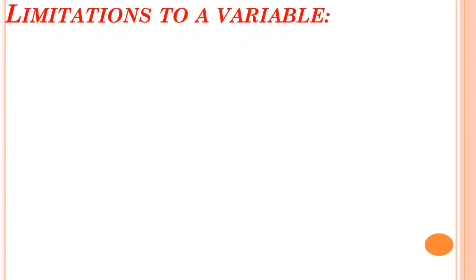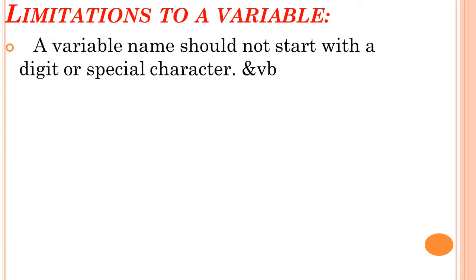Next are the limitations to a variable. While giving a name to a variable, some limitations apply. First, a variable name should not start with a digit or a special character — it should start with a character. For example, '%vb' is wrong. You can use special characters or digits after the first character, but the beginning must be an alphabet.